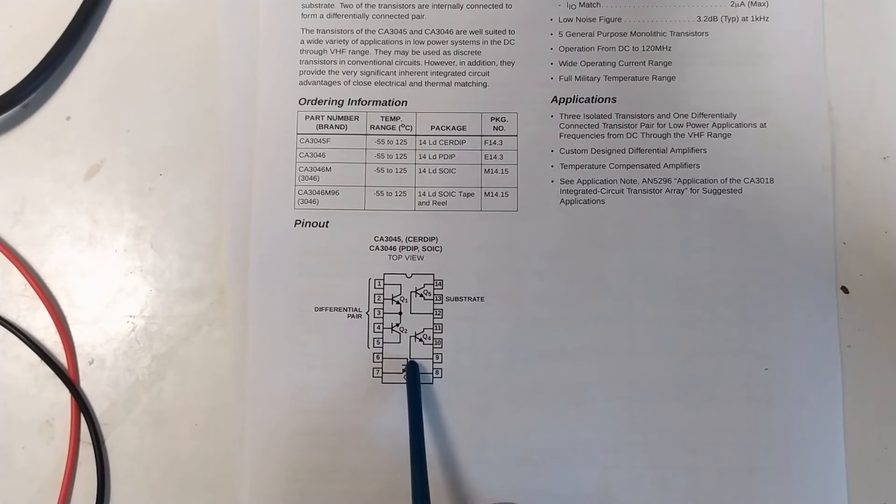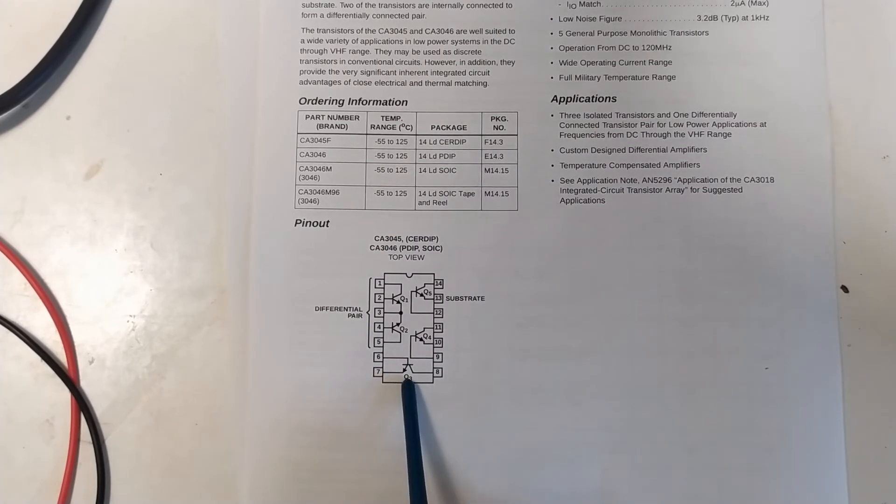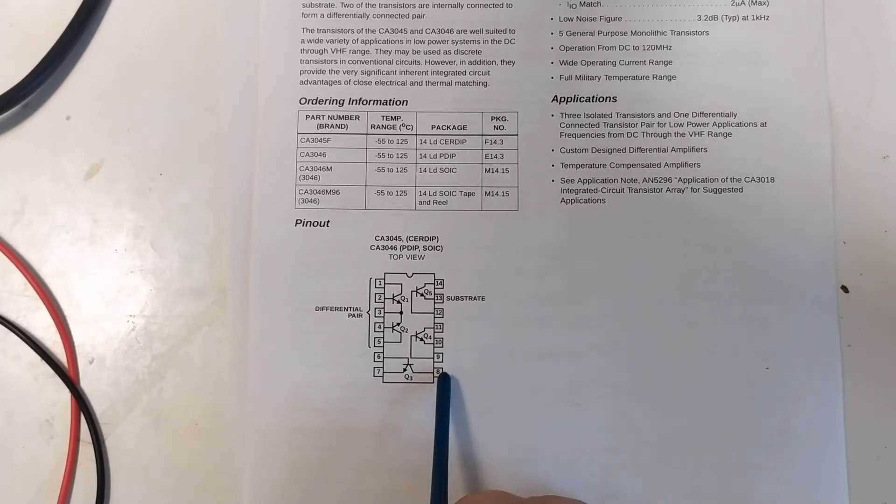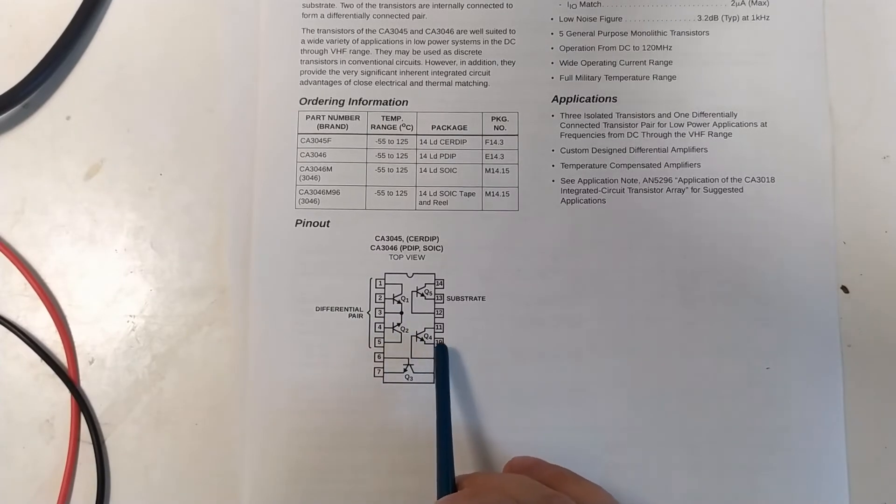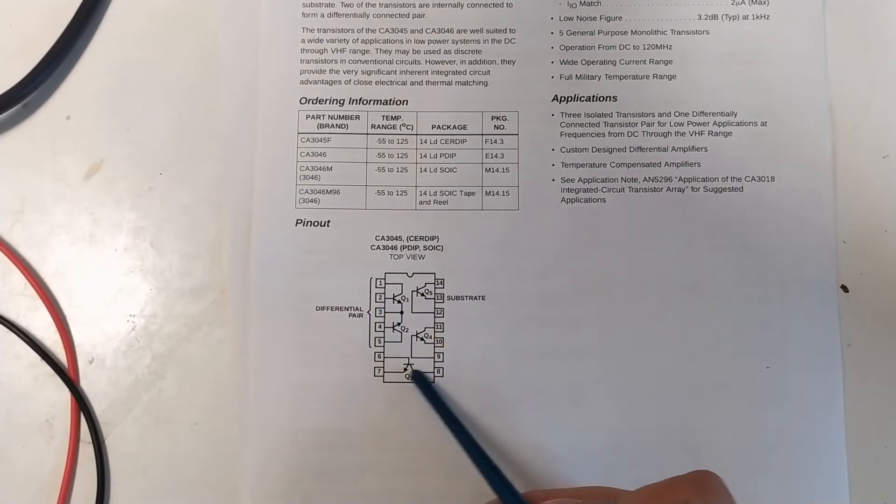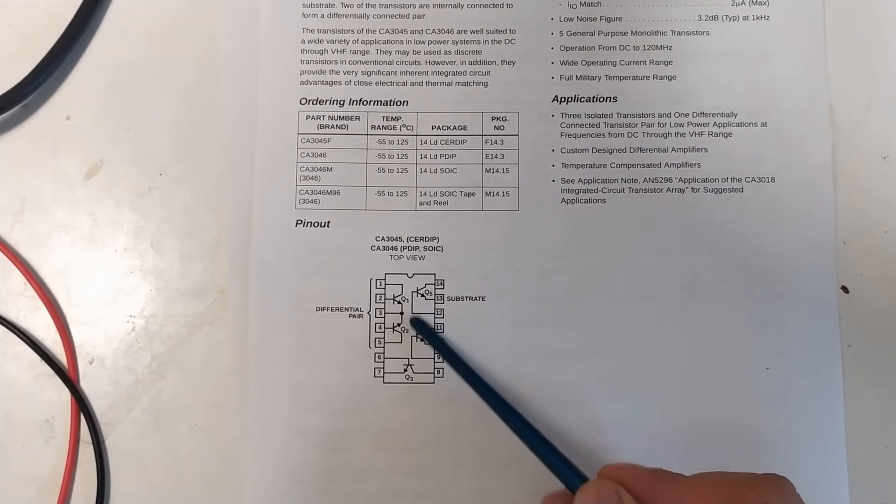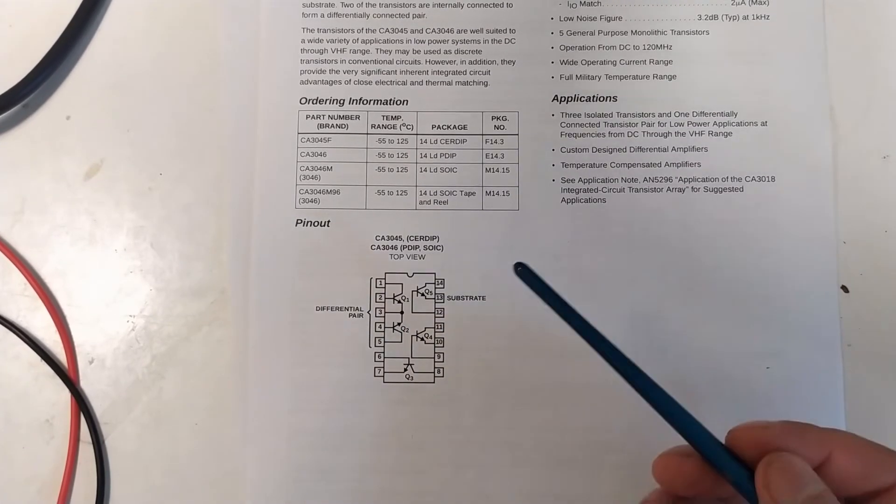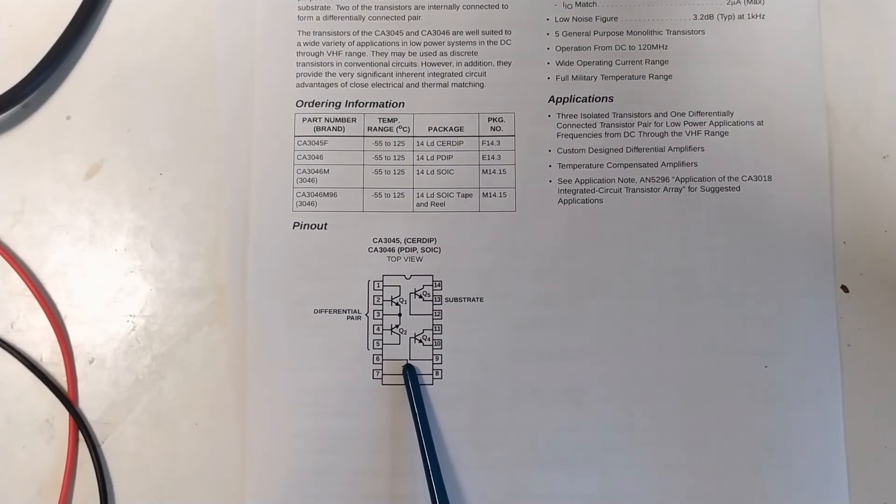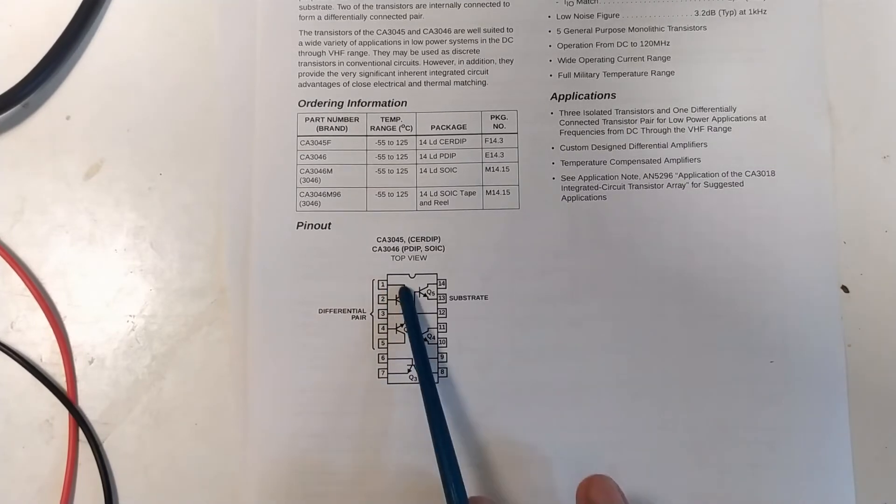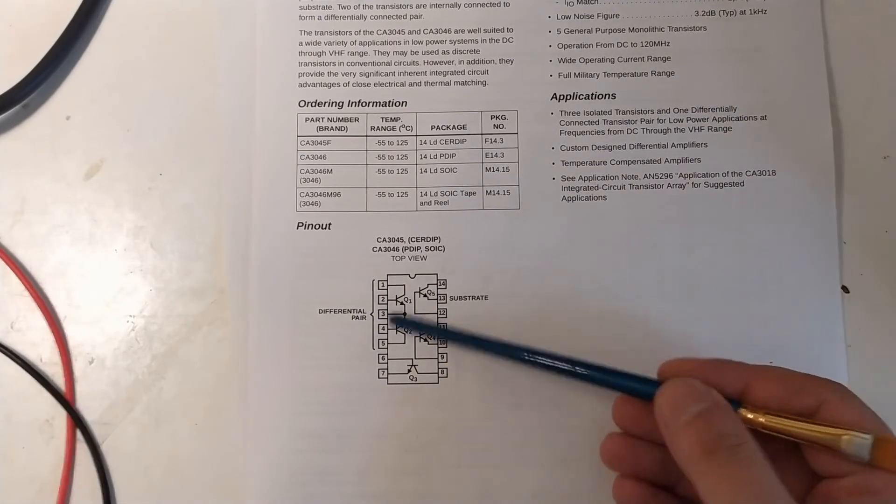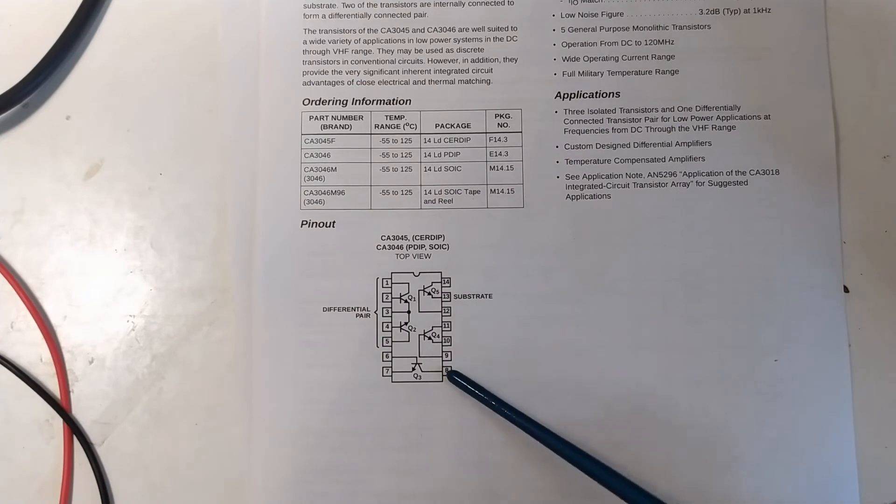You could use another transistor on the same die, like this one down here, and you could just put some current through it and therefore heat up the die. If you put a control loop in between here, you could actually regulate the temperature that the die inside of this thing has. Therefore you could get a differential amplifier that is not only firmly compensated but also at the same temperature, which is pretty cool.